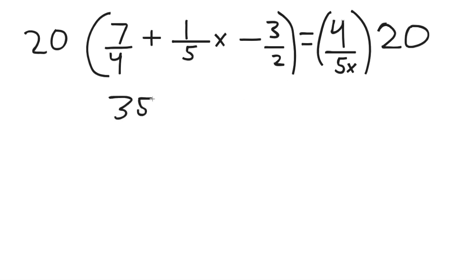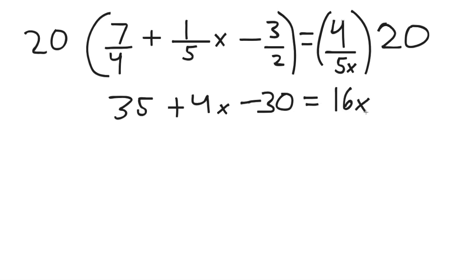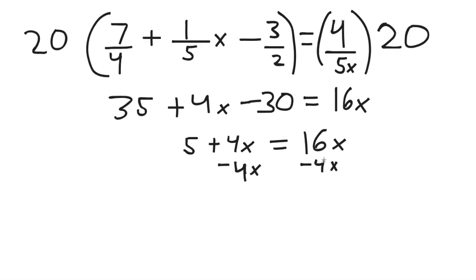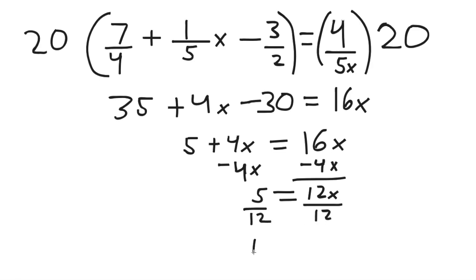Whatever you do to the left side, you have to do to the right side. After multiplying by 20, we end up with 35 plus 4x minus 30 equals 16x. Moving on to step 3, combine the like terms: 35 and negative 30 gives us 5, so 5 plus 4x equals 16x. Fourth rule — isolate the terms — subtract 4x from both sides: 5 equals 12x. Divide by 12, and x equals 5 over 12.